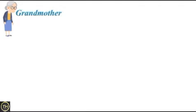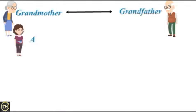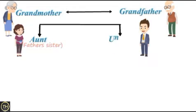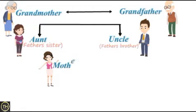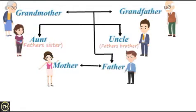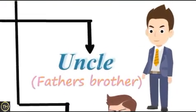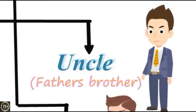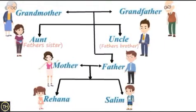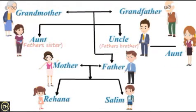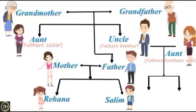The diagram showed: Grandmother and Grandfather at the top. Then Aunt (father's sister), Uncle (father's brother), Mother and Father. Their children are Rayana and Salim. Also shown: Uncle (father's brother) and Aunt (father's brother's wife), and their children Sahil and Sanya.